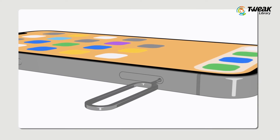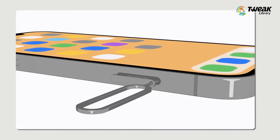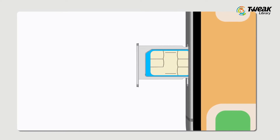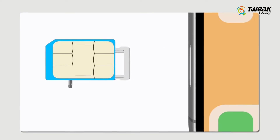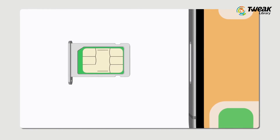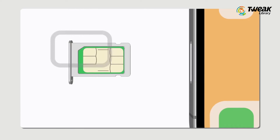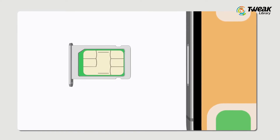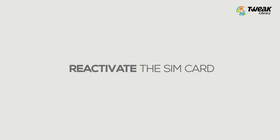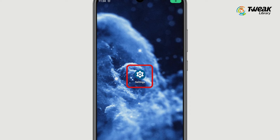Next, check your SIM card. If your Android device's SIM card is not installed correctly, you might not be able to make or receive calls. Remove the SIM card, make sure it is inserted correctly as directed by the device's manufacturer, then reinsert it and check if you can make phone calls.